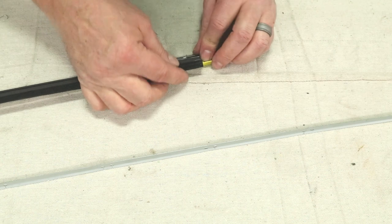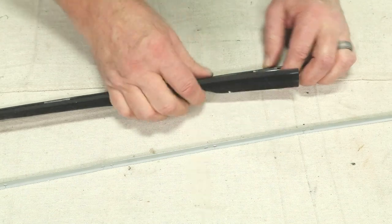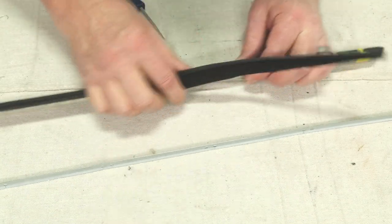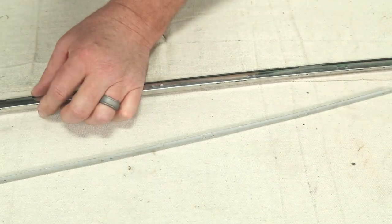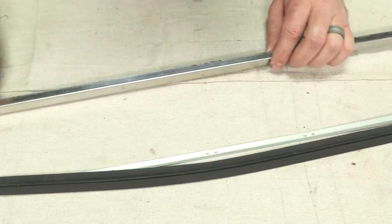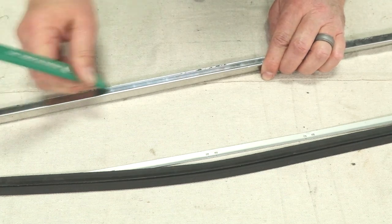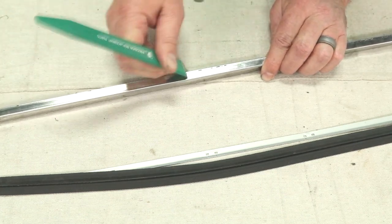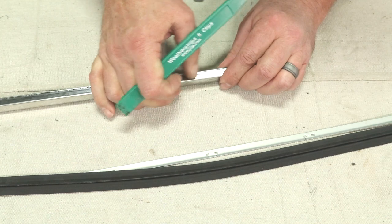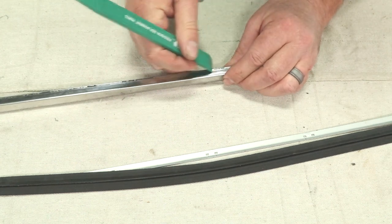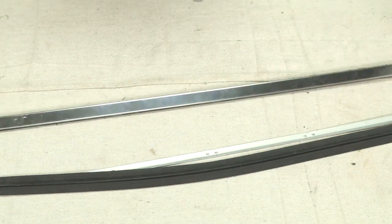There's the metal strip. There's a rubber strip. I'll go ahead and if there's any residual weatherstripping left behind, we'll go ahead and get this cleaned off. Now we have just our chrome outer molding left.